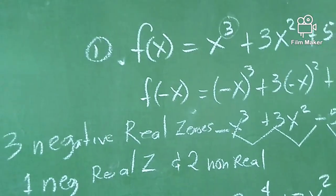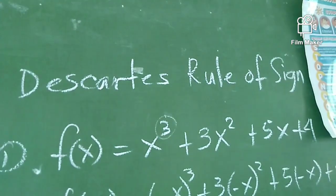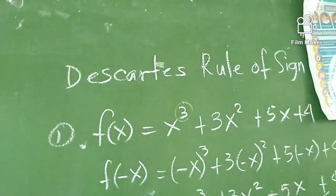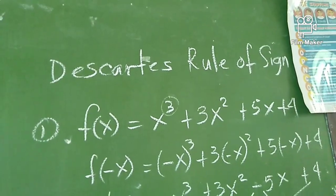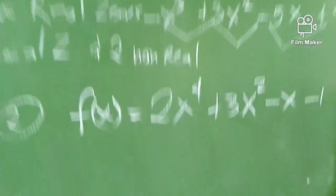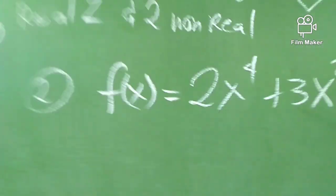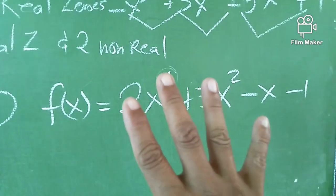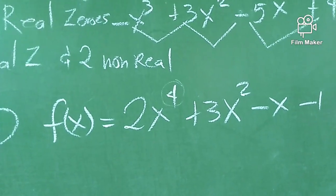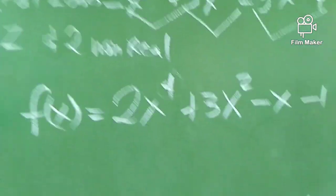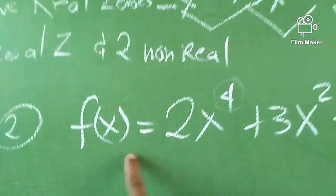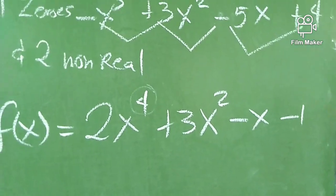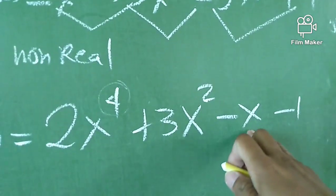Did you get my point? With the Descartes Rule of Signs, we first estimate how many are positive, how many are negative, and how many are non-real zeros. Once we achieve that, we minimize what we compute. Example number 2: the highest degree polynomial is 4, meaning we have 4 zeros for this computation. For the positive real zeros, let's check first if there is an interchange of sign.